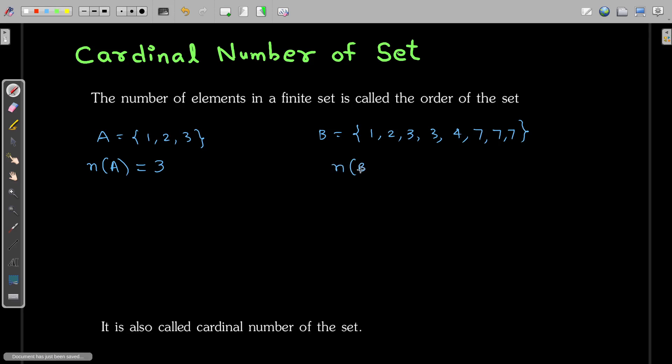but actually the cardinal number of this set B is 5. Because this set B is equivalent of writing this: 1, 2, 3, 4, 7. Now, if you observe, there are 5 elements. Therefore, cardinality or cardinal number of this set B is 5.